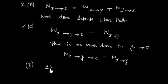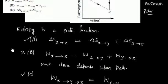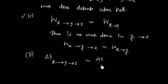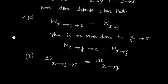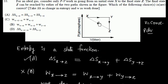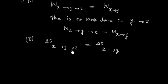Now let us consider the last option regarding entropy change from X to Y to Z. This is not correct because entropy is a state function that depends on the initial and final states. In one case the final state is Z, and in another case it is Y — since the final states are not the same, the entropy changes are not the same. So this option is wrong.